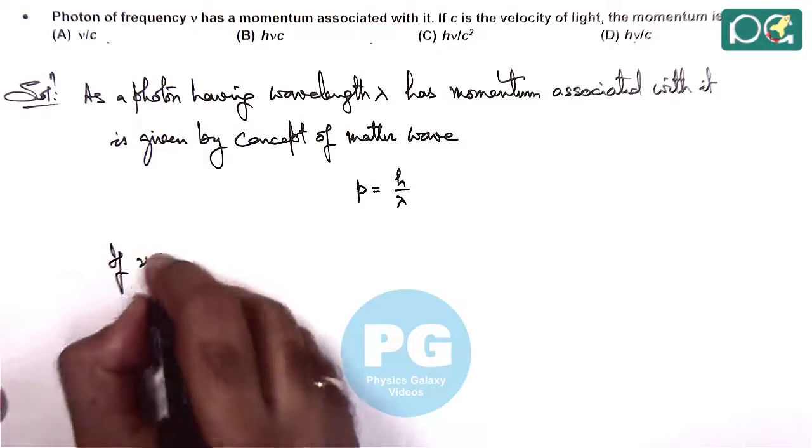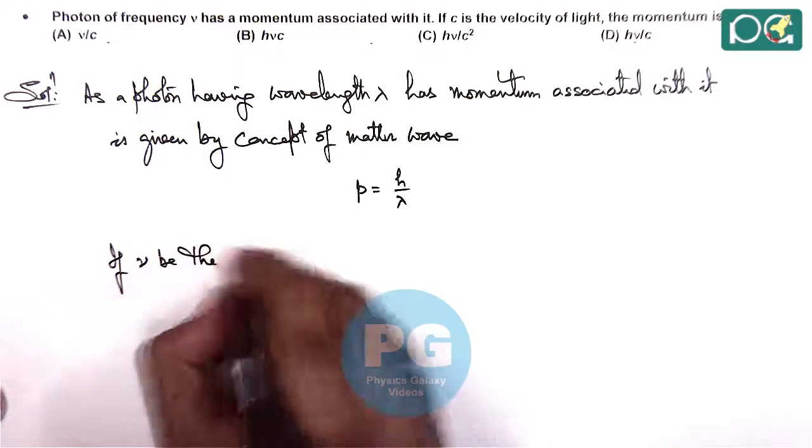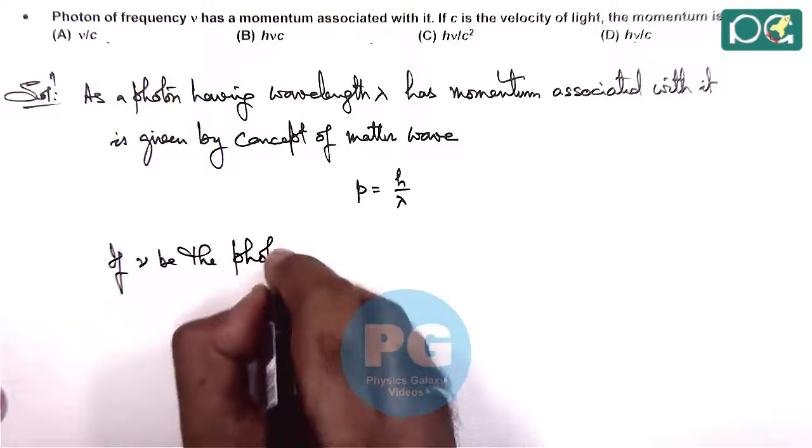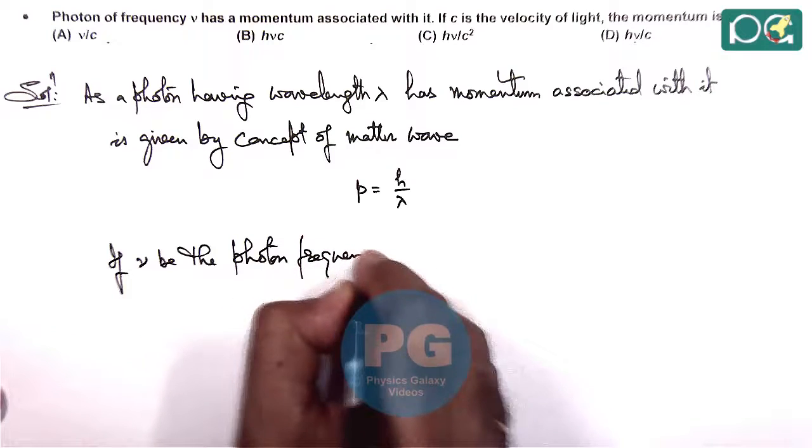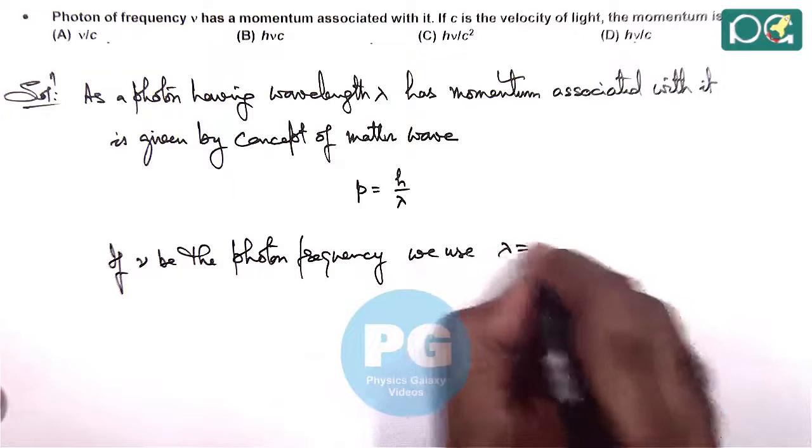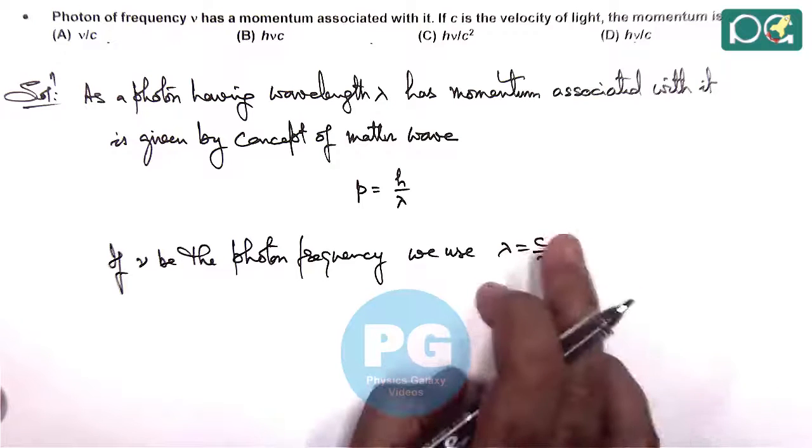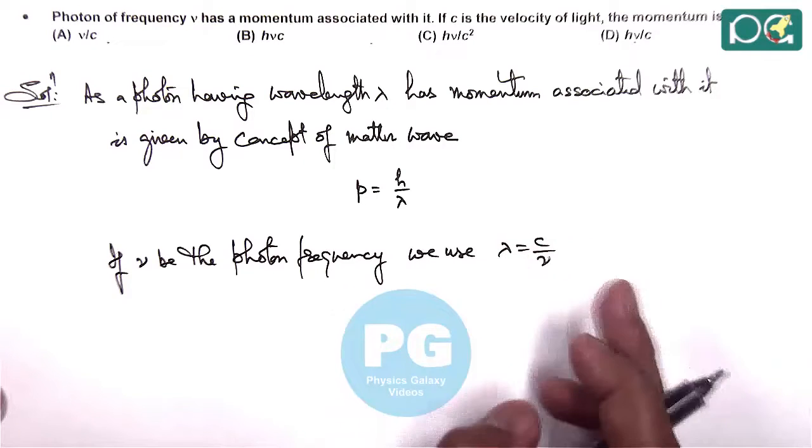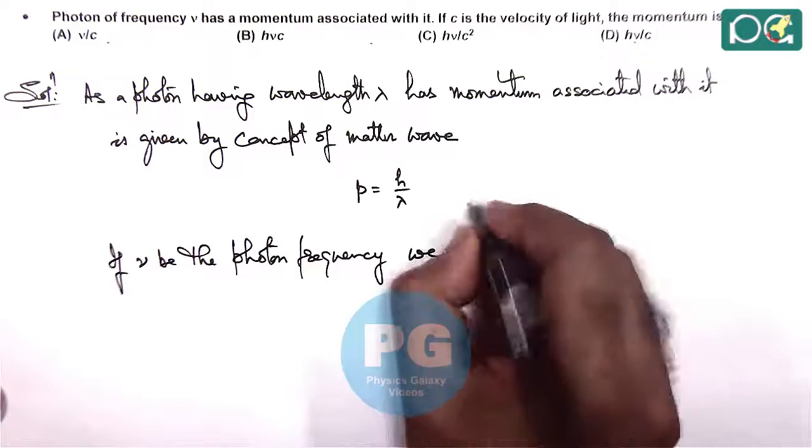So we can write, if nu is the photon frequency, here we use lambda equals c by nu, if c is the speed at which the photon travels, speed of light, and nu is the frequency.